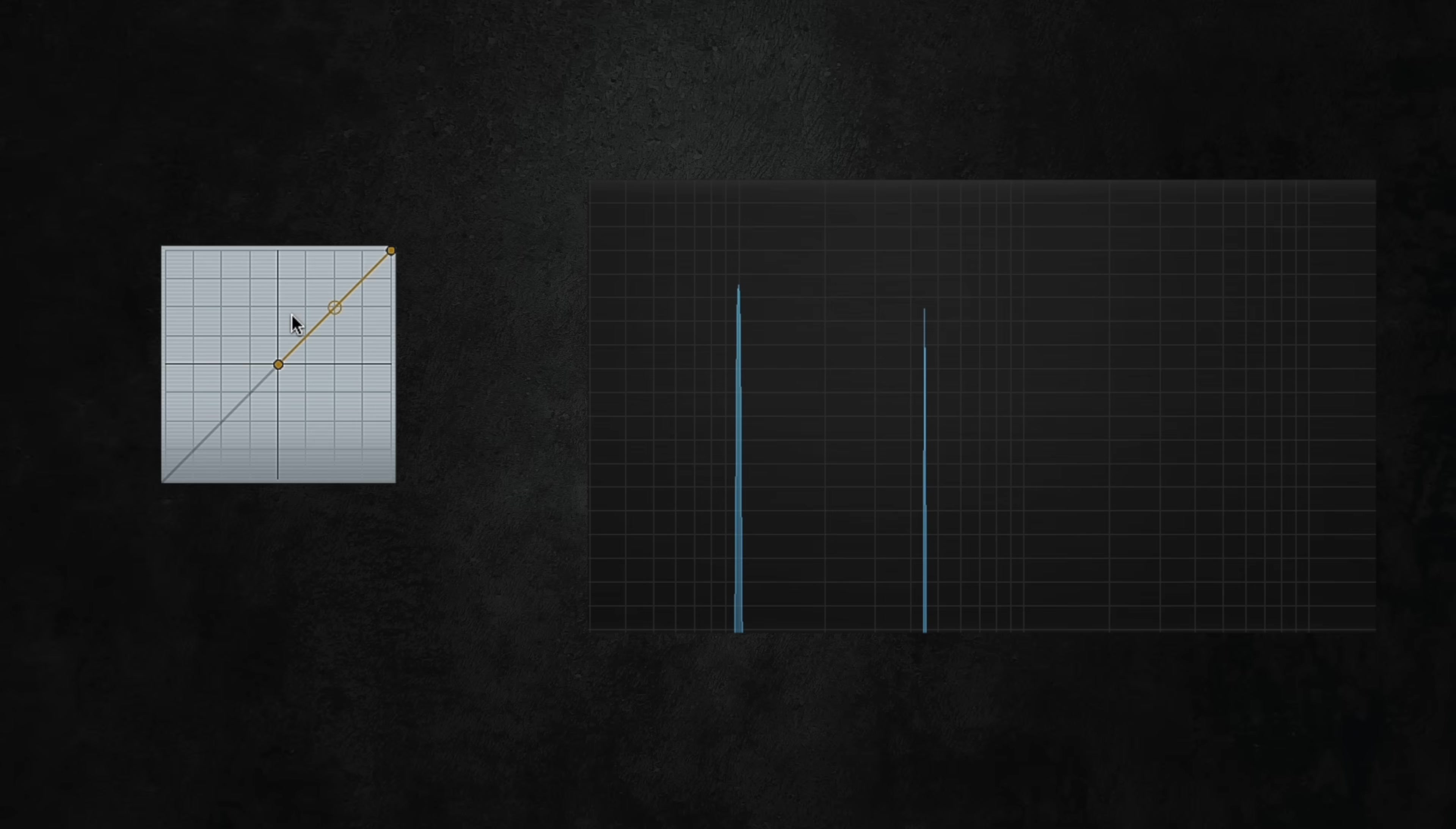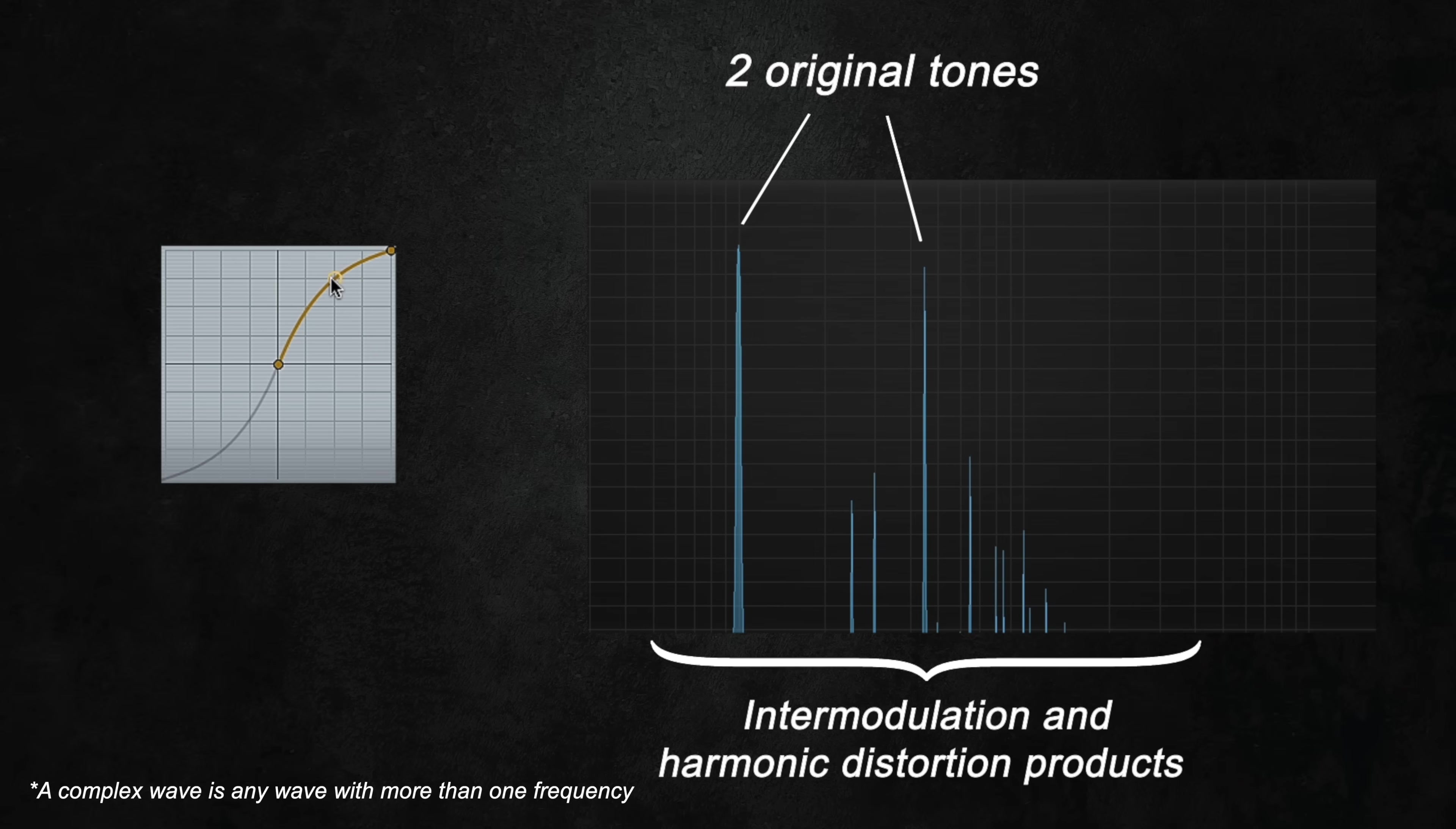Remember from the first video in this series, intermodulation distortion occurs when you distort a complex wave and the added frequencies aren't harmonically related to each other, which can sound harsh. If the sound you're distorting is complex, like a real instrument, you'll get intermodulation distortion and there's nothing you can do about it.